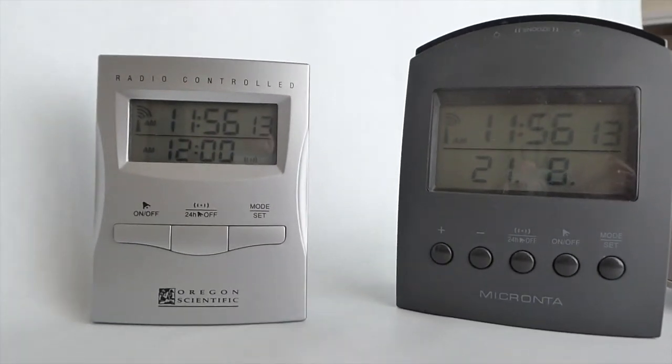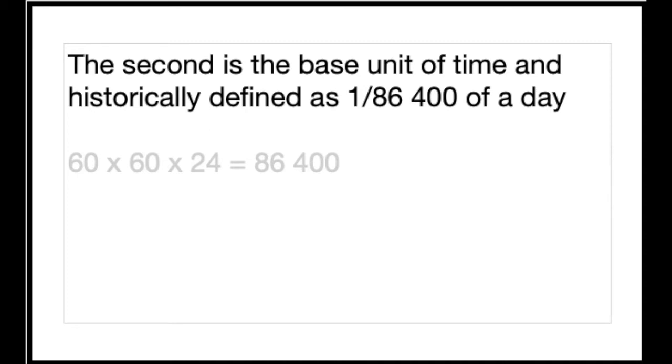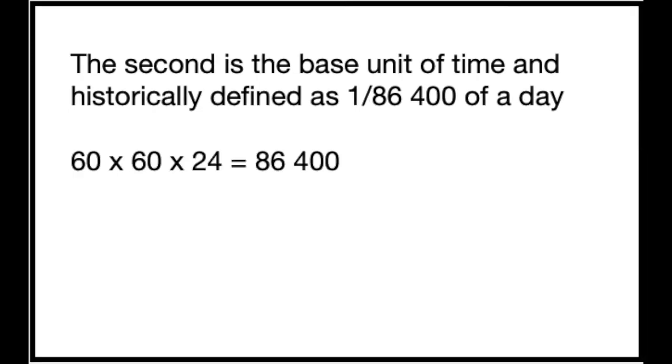We associate time with the change of the day, and that's where the original definition of a second came. It was historically defined as 1 over 86,400th of a day, that is 60 seconds times 60 minutes times 24 hours.